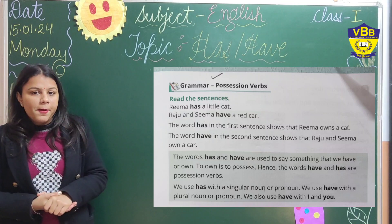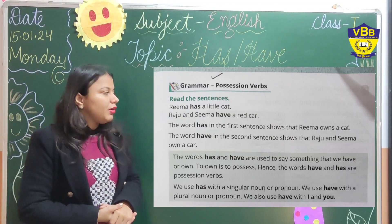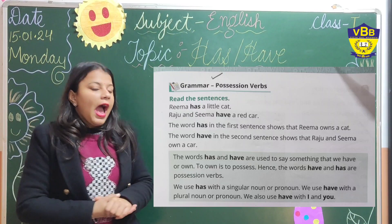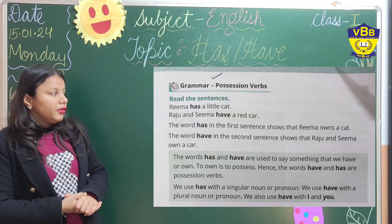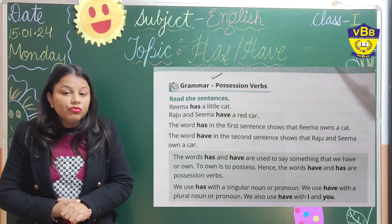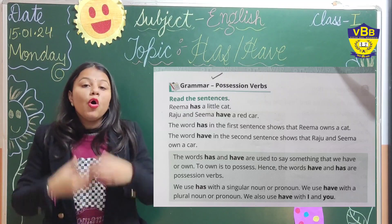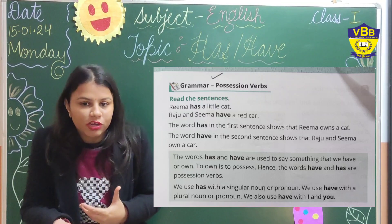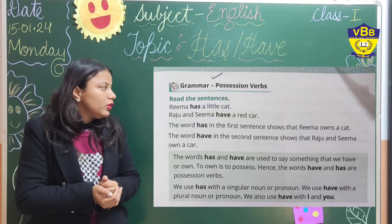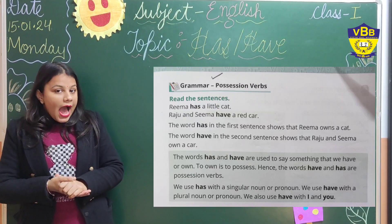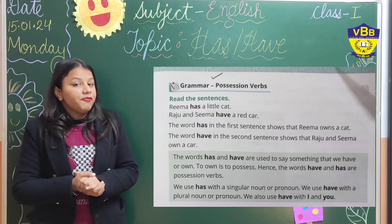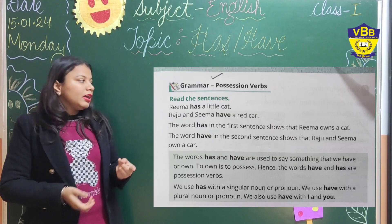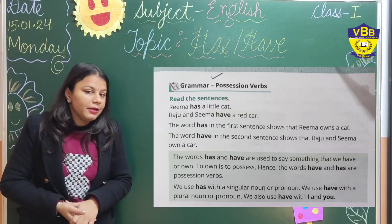Now can you see the green box here? Read the words in the green box. The words has and have are used to say something that we have or own — to show possession. Hence, has and have are called possession words. We use 'has' with singular things — with he, she, it — when we are talking about only one person, place, animal, or thing.